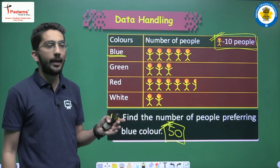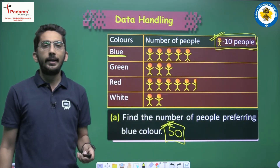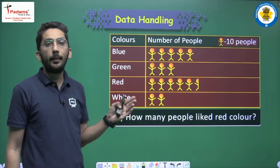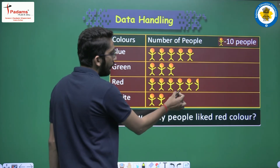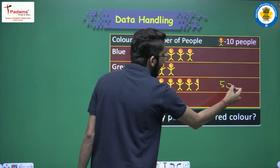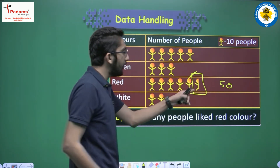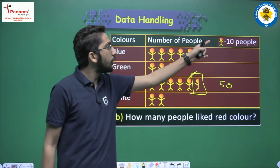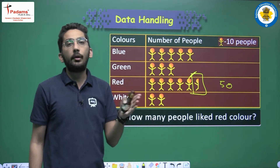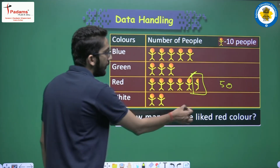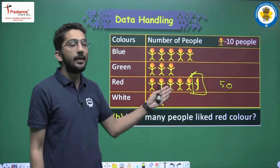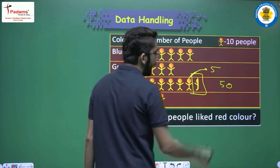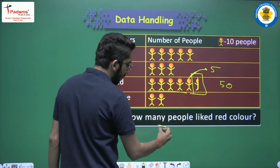Students, whenever you solve questions, don't forget to check the scale. For red color, we count 5 complete images — that is 50 — but there is also a half image. A half image means it is not 10, it is approximately half, which is 5. So the total for red is 50 plus 5, which is 55. Always remember: if you see a half image, we assume it represents around half the scale value.